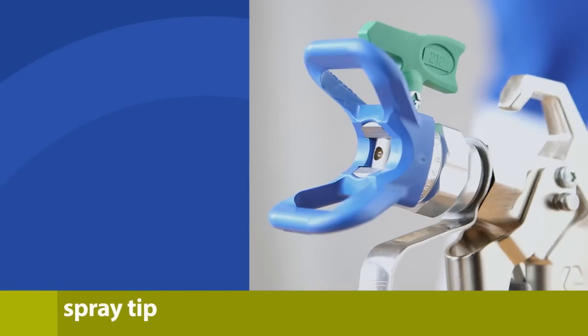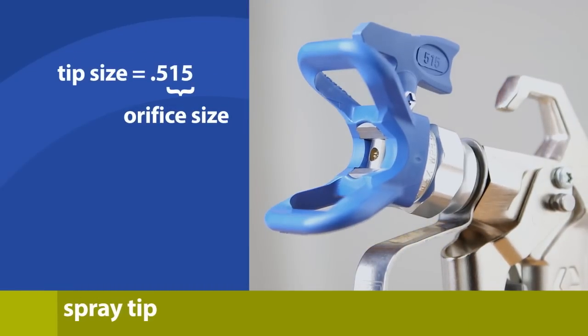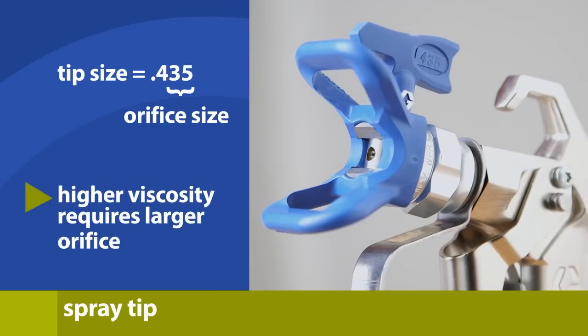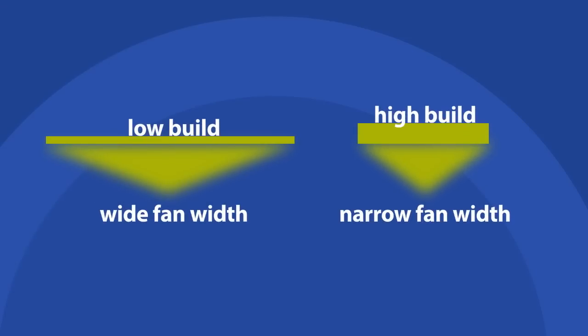Now let's look at the spray tip, the most critical part of your system. Typically, paints with higher levels of viscosity will require a larger orifice size. Assuming the size of the orifice doesn't change, wider fan widths will result in lower film thickness. Narrow the fan width to achieve a higher film build.